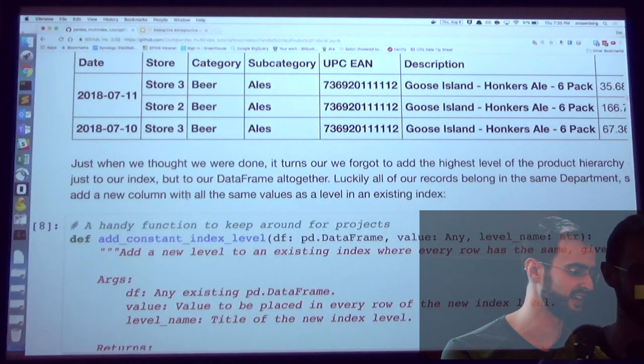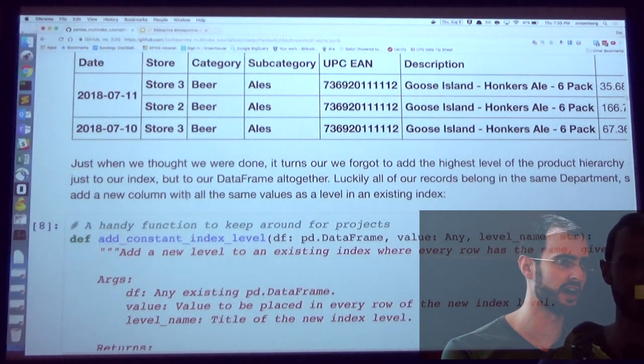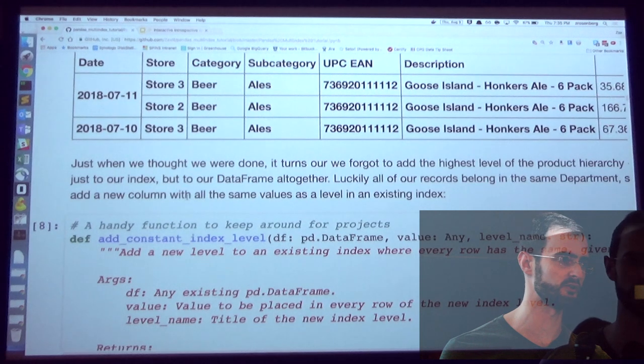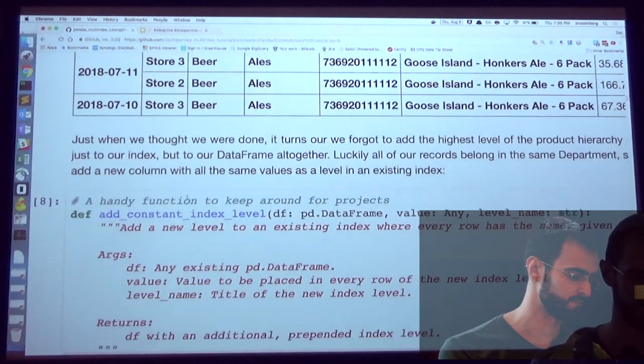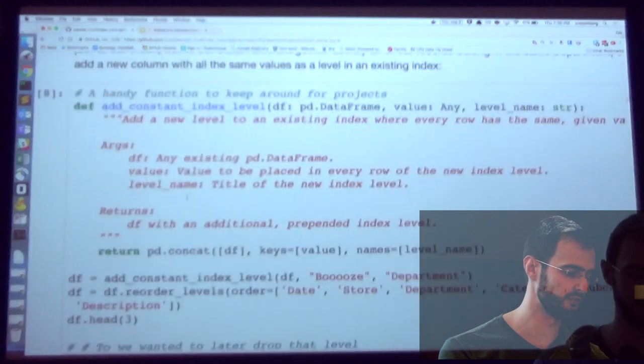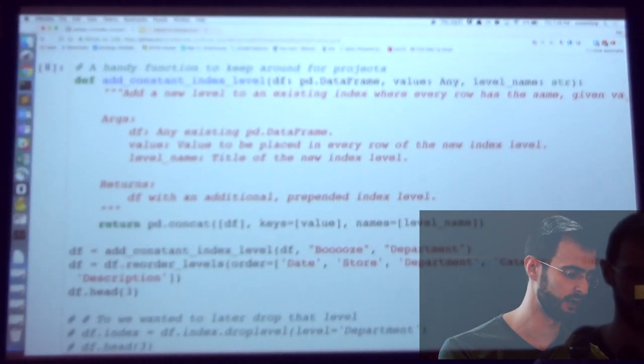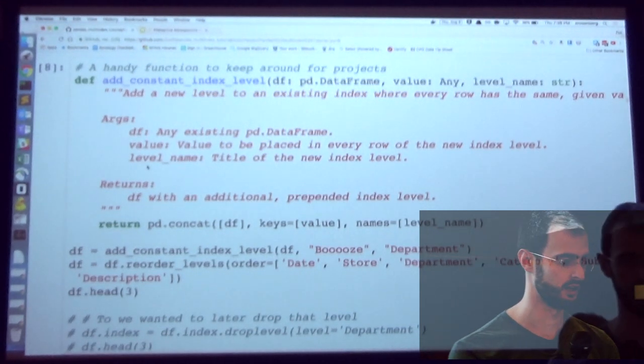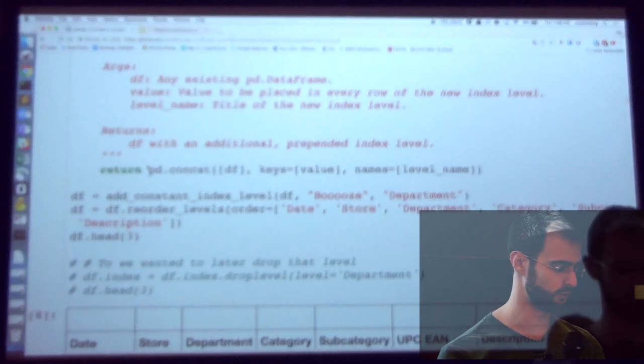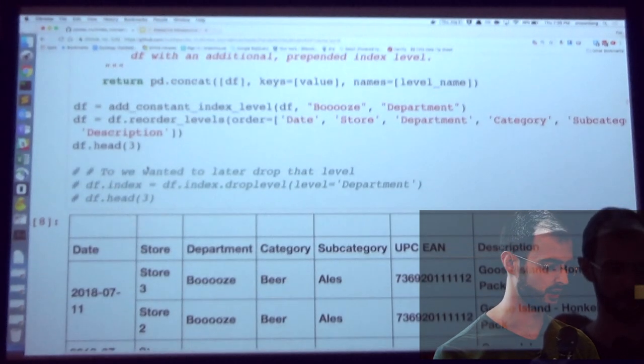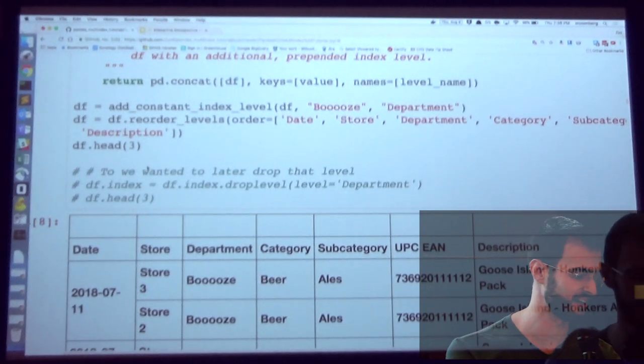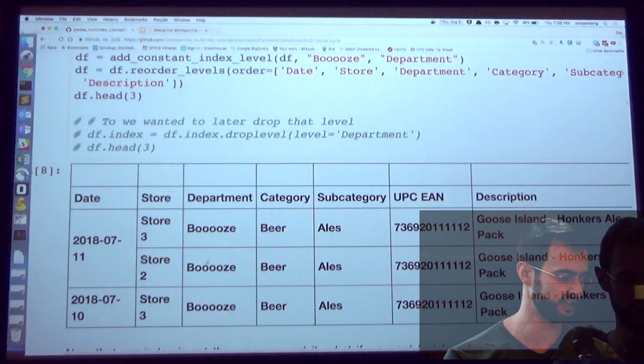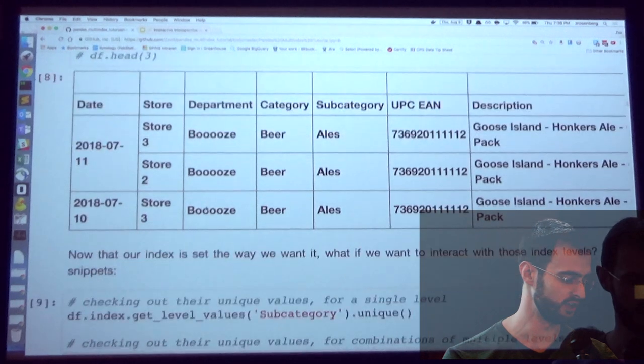So we're close. I stupidly forgot when I was making this data that I need a department column as well. So the levels of hierarchy. My grocery store has a department. Within a department, I have categories. Within a category, I have subcategories. And within those subcategories are specific products. I forgot department. So we can add a level even though this data doesn't exist anywhere. We're going to add a constant level. I wrote this function here so you can all use it. I find myself using it almost every day to add just fixed values to a data frame. And then we're going to use that reorder_levels again to get in the right order. And ta-da! Now we have everything we actually need.